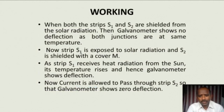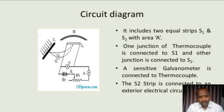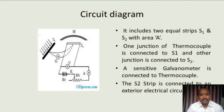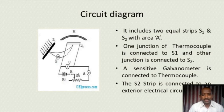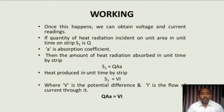Now, current is passed through strip S2. We supply current through the battery by adjusting the rheostat such that the galvanometer deflection becomes zero. Whenever we get zero galvanometer deflection, the voltmeter reading and ammeter reading should be noted. The value of potential difference and current is measured using these devices, and we obtain the voltage and current readings.